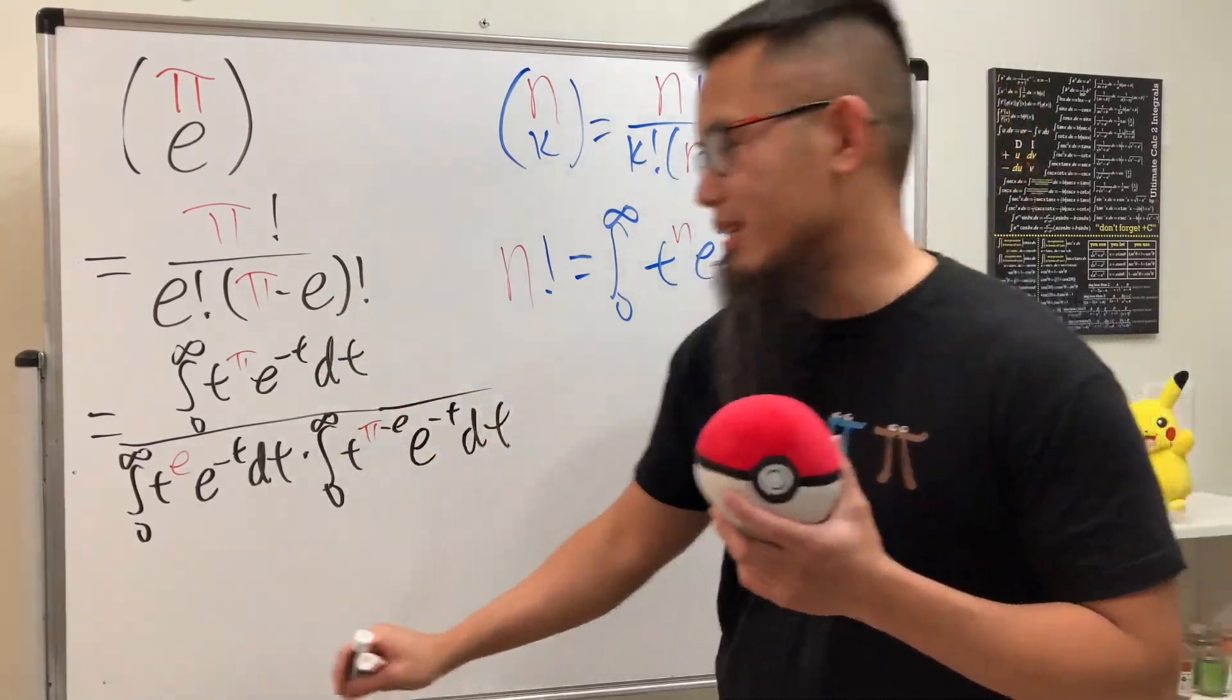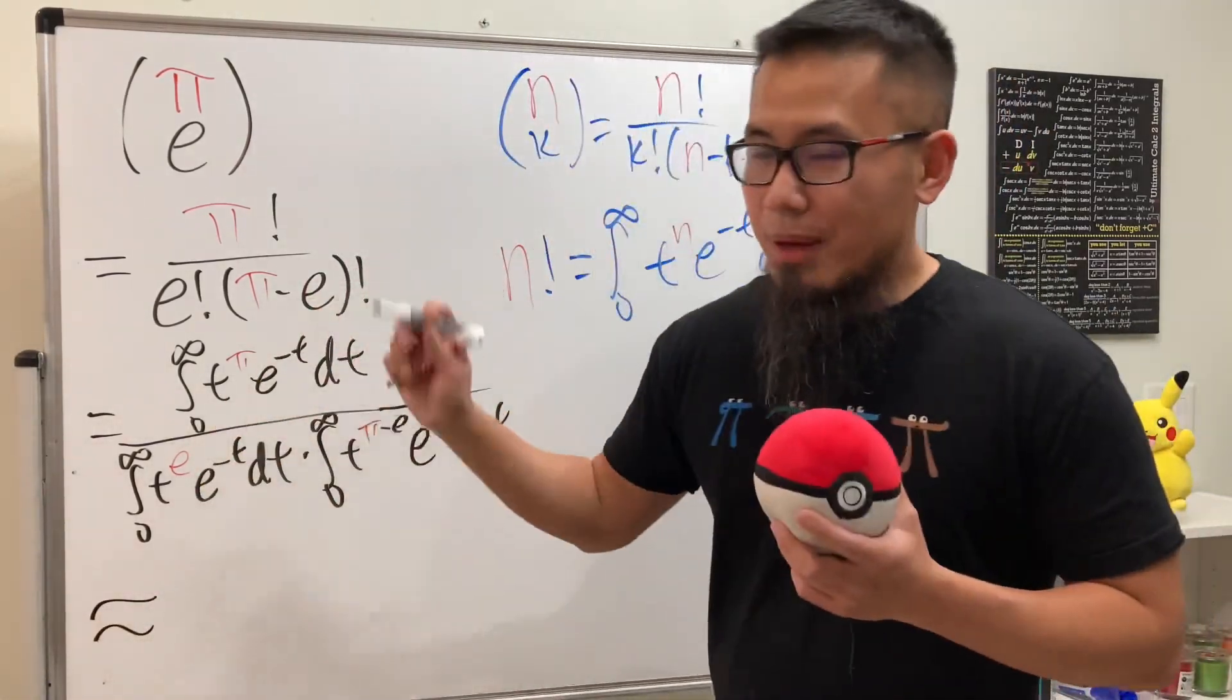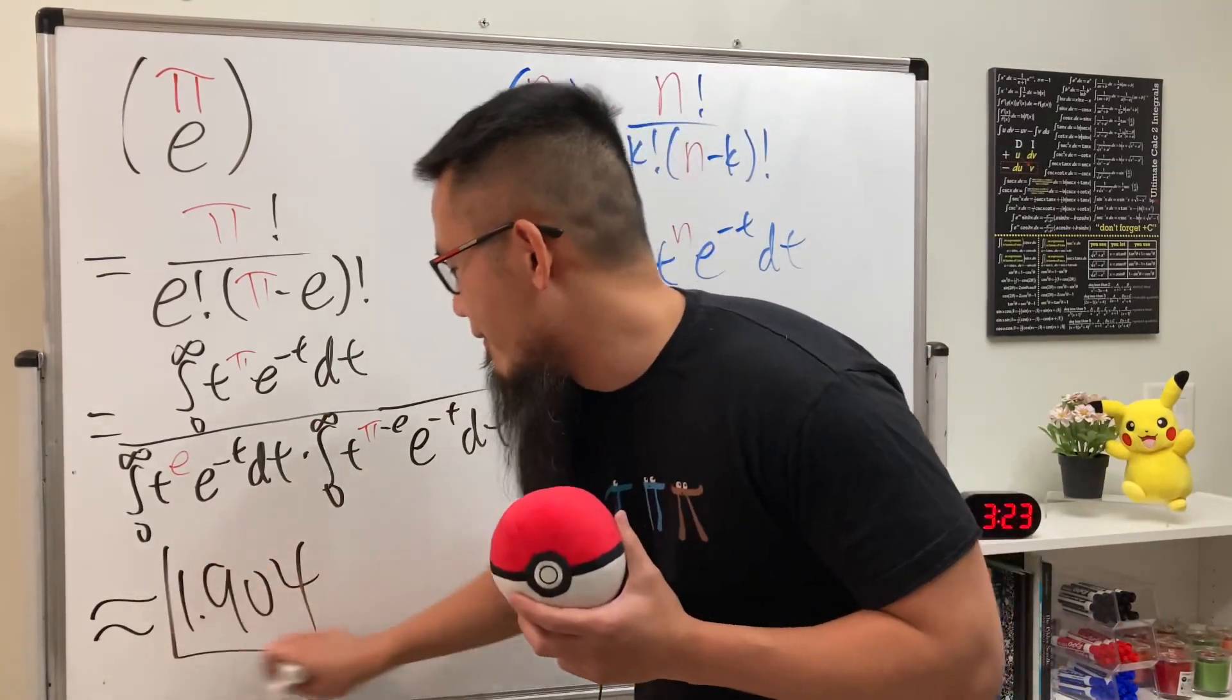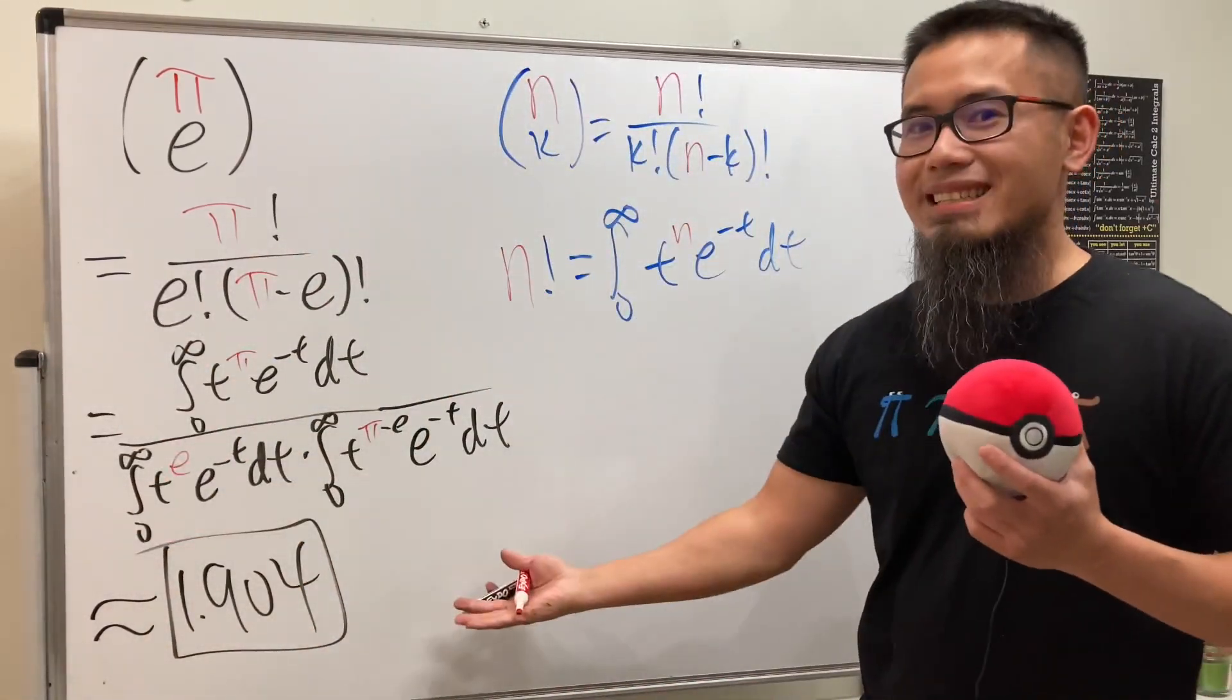And you can just do all this, and let me tell you guys that you will get approximately 1.904. That's it. That's pi choose e.